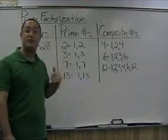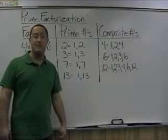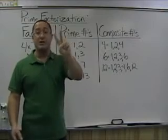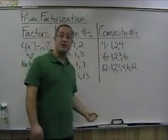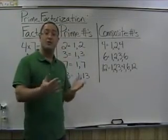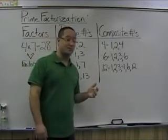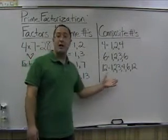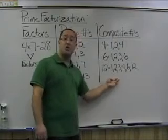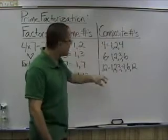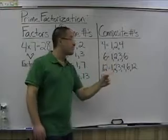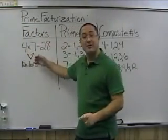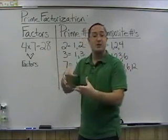By the way, 2 is the only even prime number because all other even numbers are composite — they all have 2 as a factor. Composite numbers are all numbers greater than 1 that have more than 2 factors. For example, 4 is composite with factors 1, 2, and 4; 6 has four factors: 1, 2, 3, and 6; and 12 has six factors: 1, 2, 3, 4, 6, and 12. Factors are numbers you multiply together to make another number, or divide evenly into another number without a remainder.